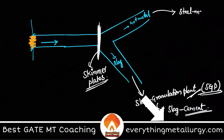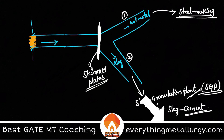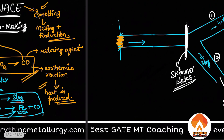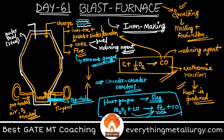The hot metal is taken for steel making using ladles as the transportation system. So the two main outputs are hot metal and slag. But these are not the only outputs — you also have something coming out from the top called the blast furnace top gas.